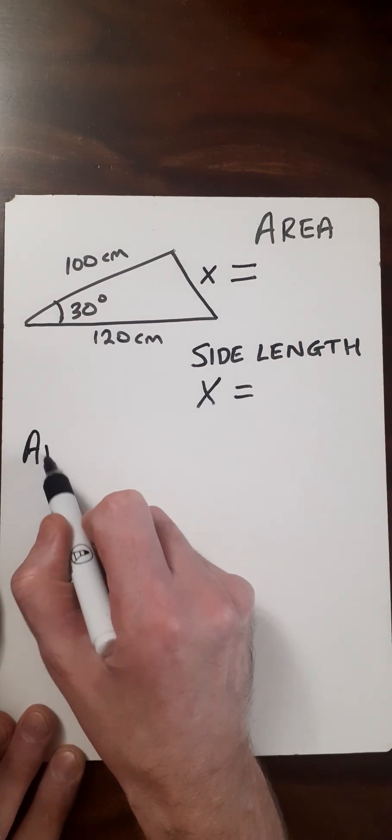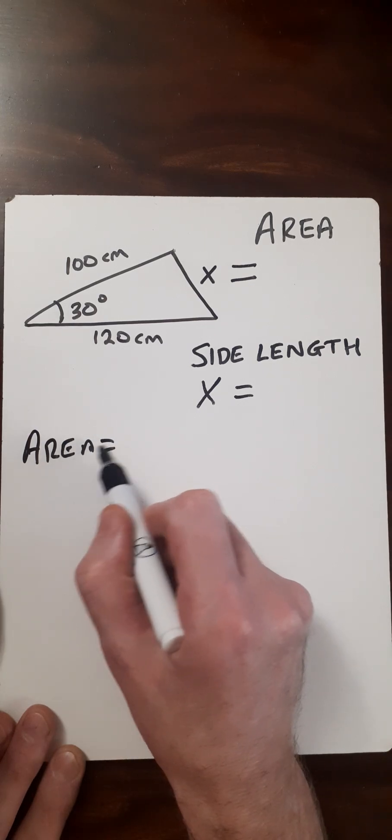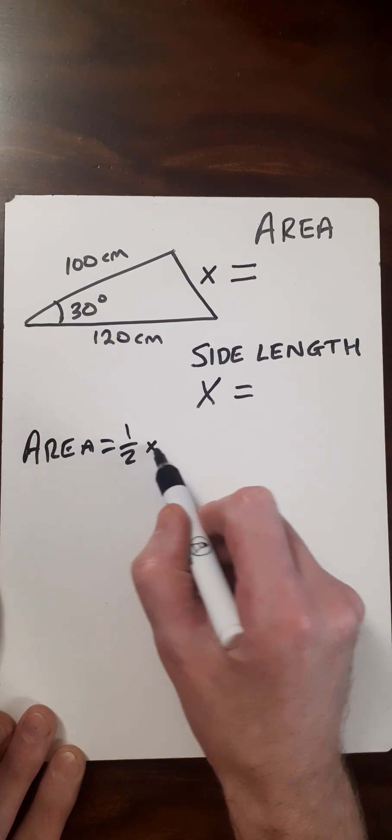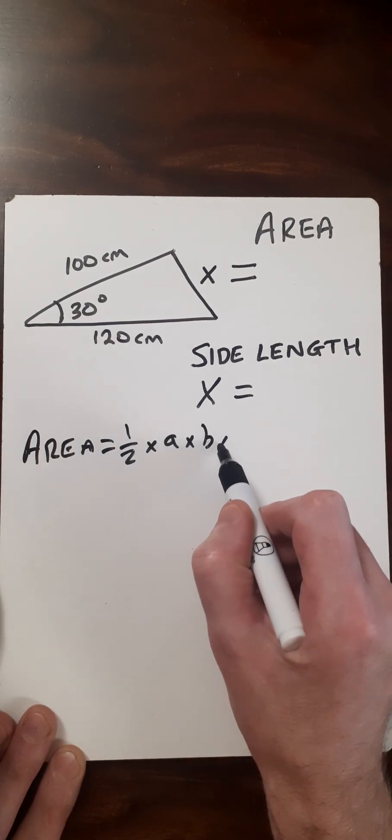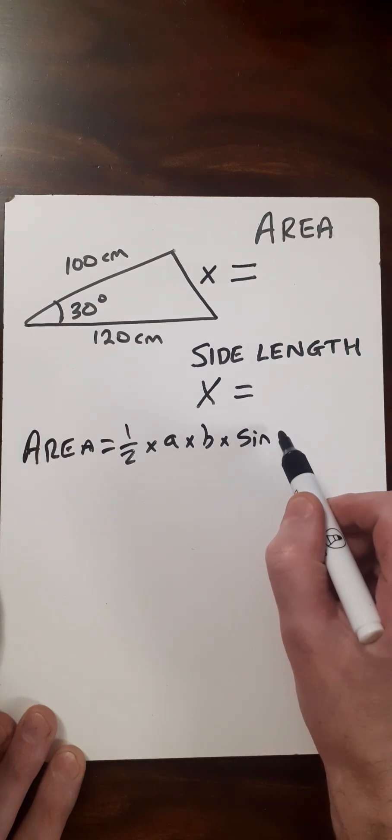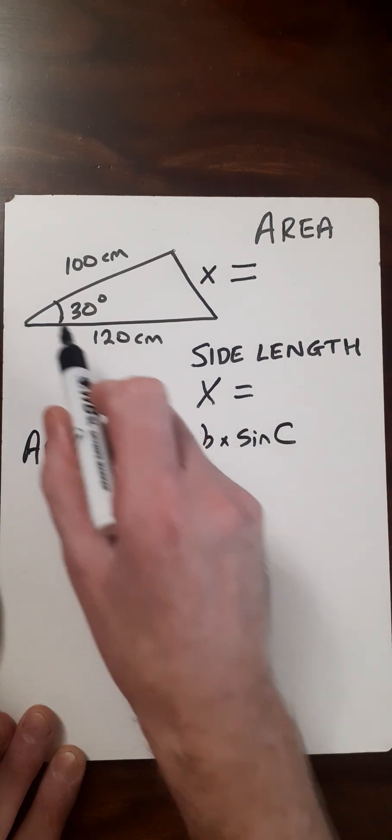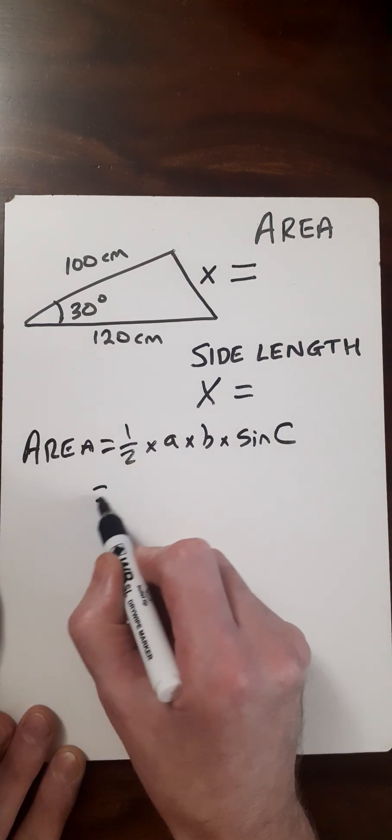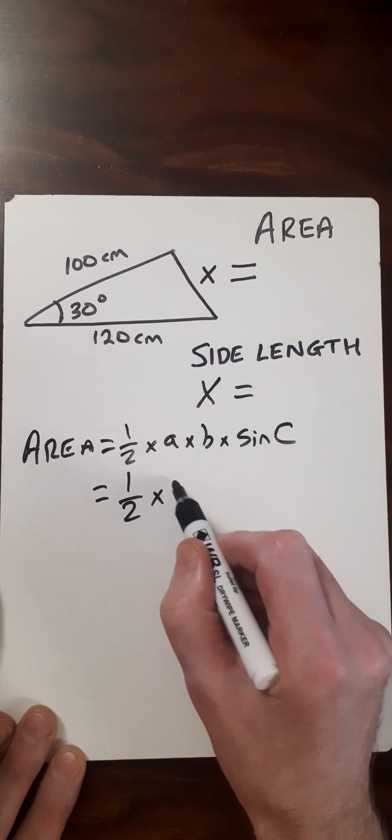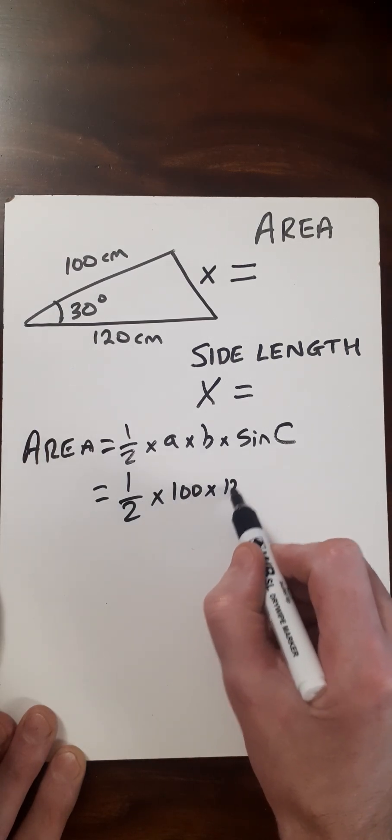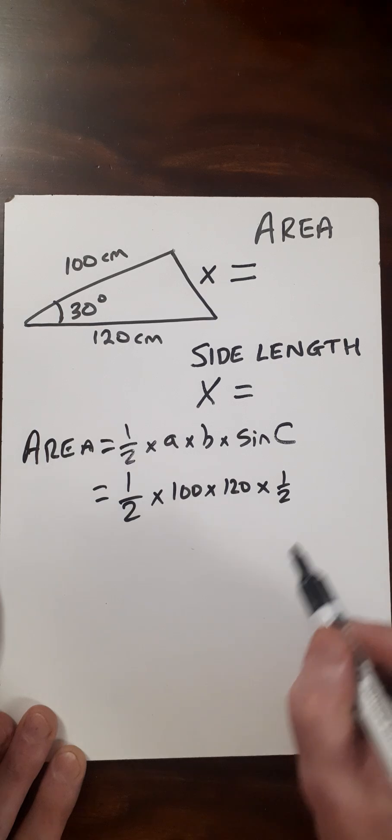The area equals one half times A times B times sine of C. We call this angle C. So that equals one half times 100 times 120, and sine of C is a half.